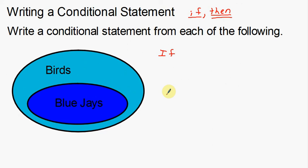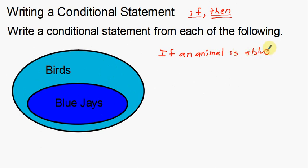A blue jay is a bird, but I don't want to use 'bird' in the hypothesis because that's going to be part of my conclusion. I don't want 'birds' in both the hypothesis and the conclusion. So I've got to think a little bit broader. Blue jays and birds — what are these things? These are animals. So: if an animal is a blue jay — that's going to be my hypothesis.